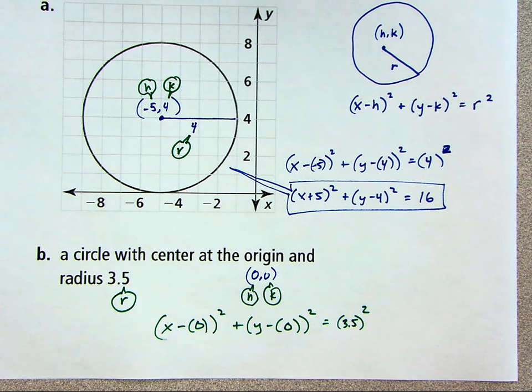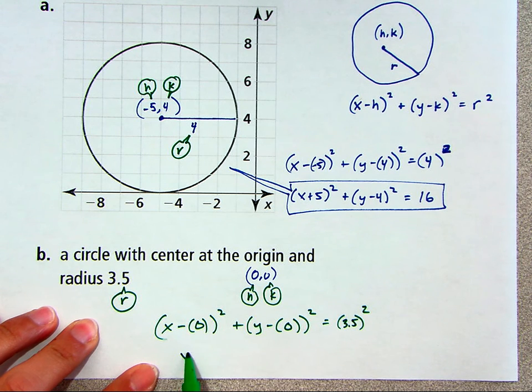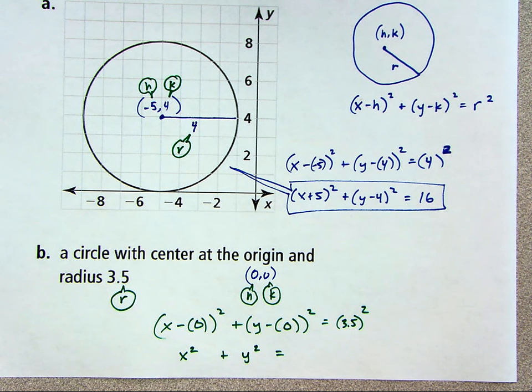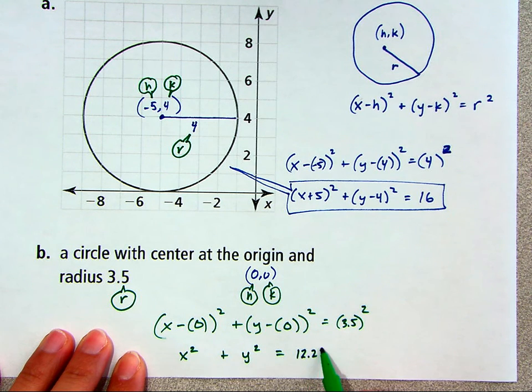And then we just clean it up. This is just going to be x squared. The next term is just going to simplify to y squared. And then you can leave this as 3 and a half squared, or you can simplify that. 3 and a half squared is 12 and a quarter, 12.25.